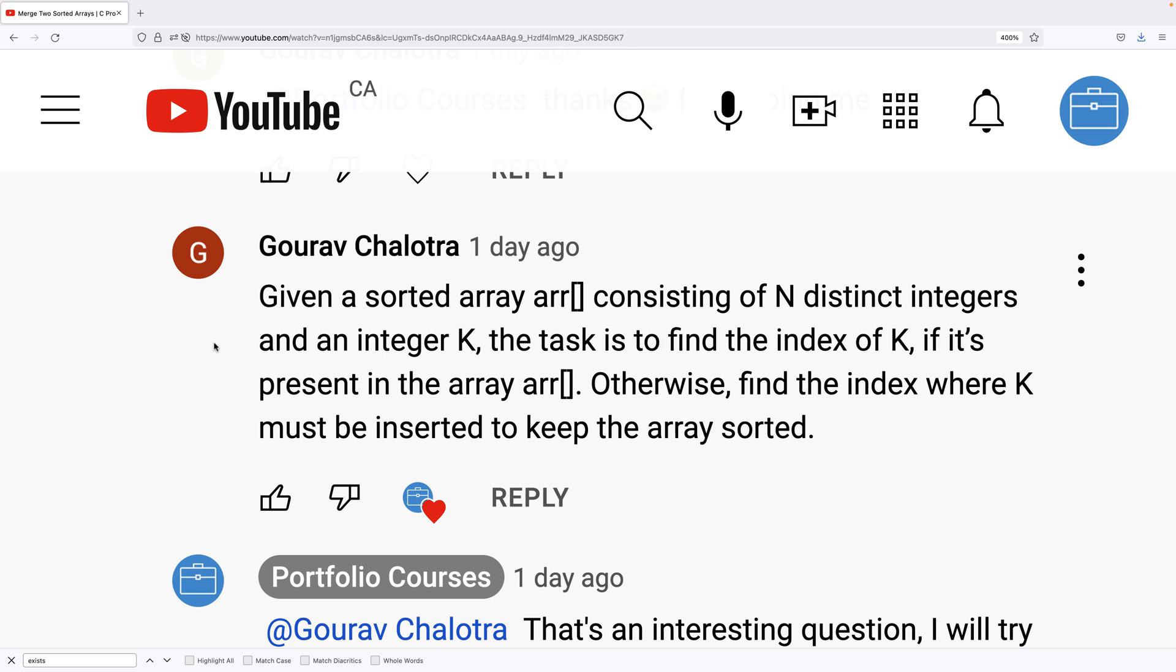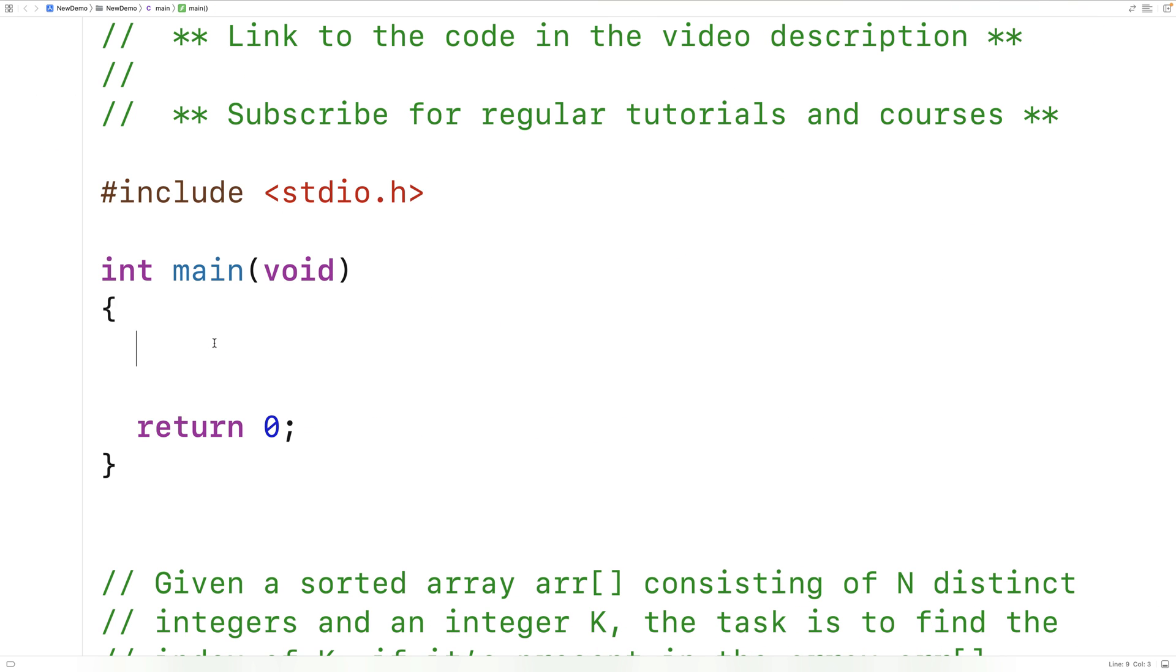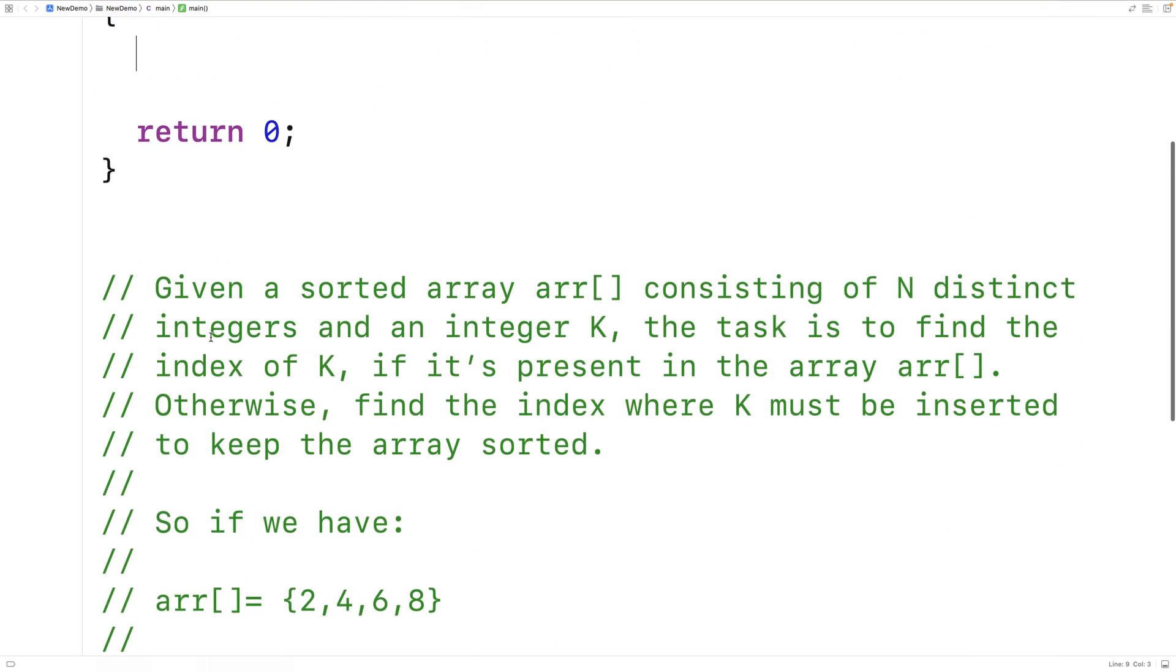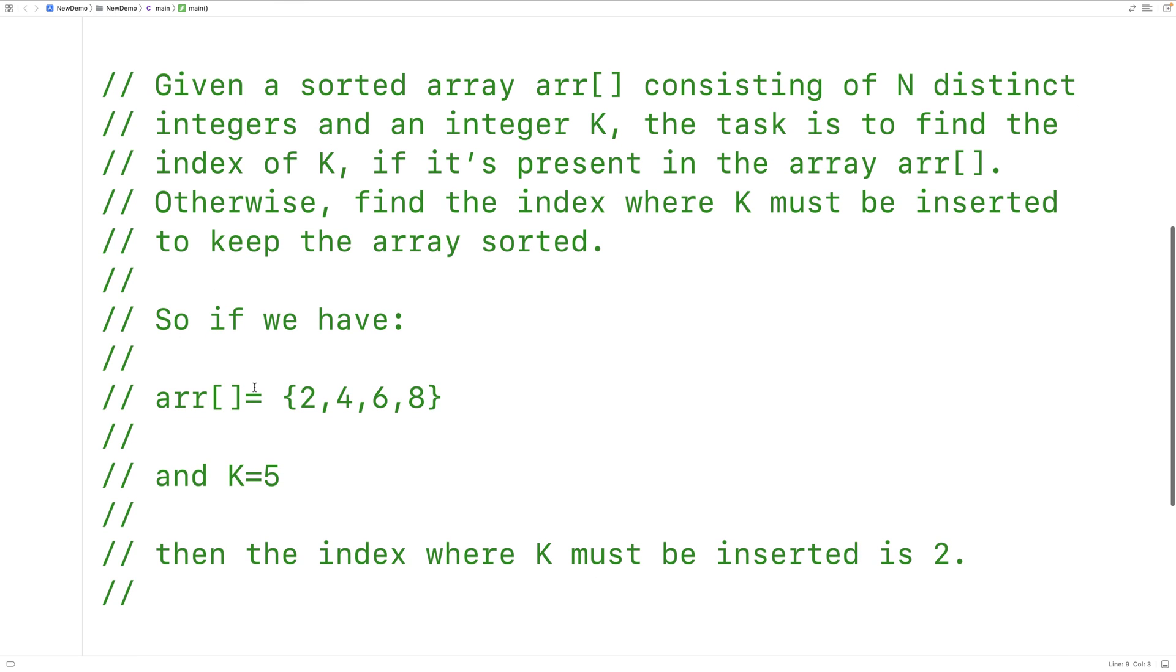So let's go over an example of how to solve this problem. For example, if we have an array that looks like this, with 2, 4, 6, and 8, and K is 5, the index where K must be inserted is 2.